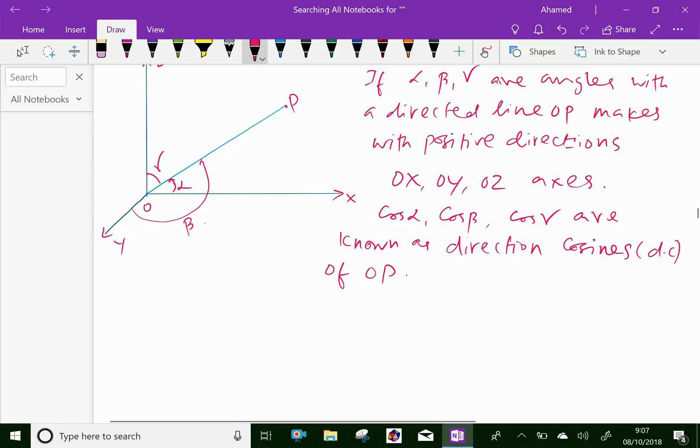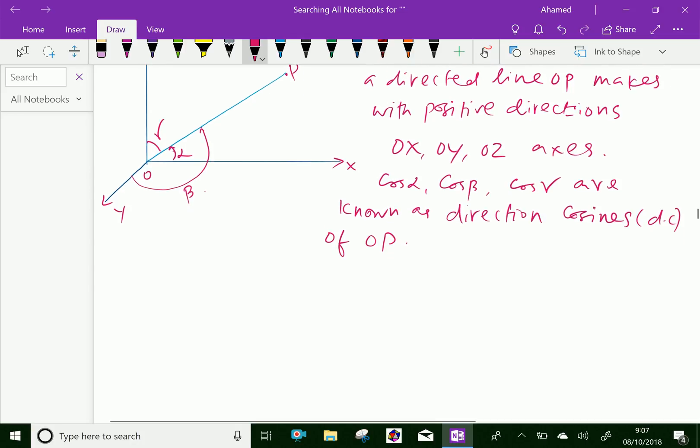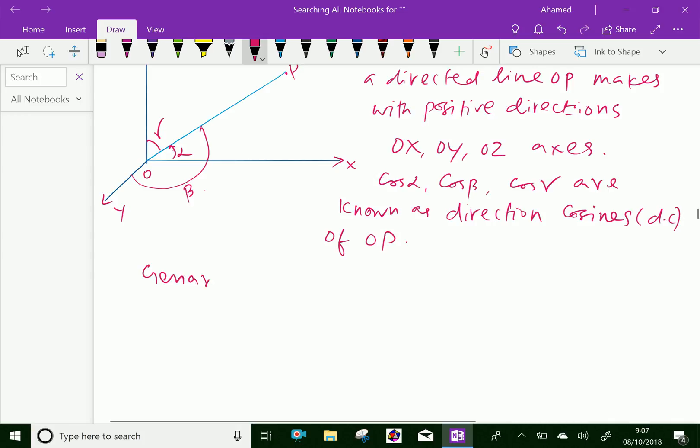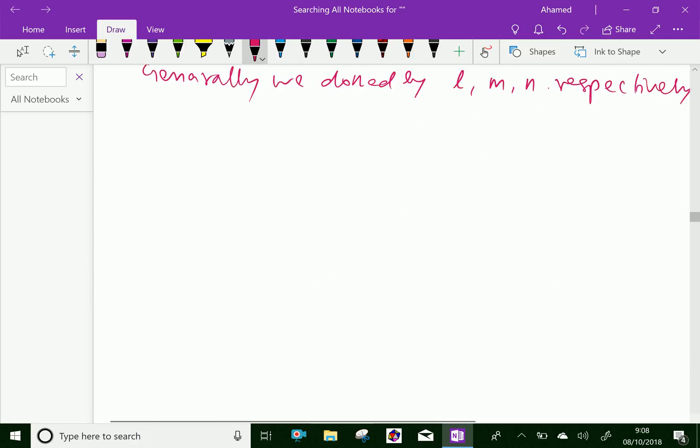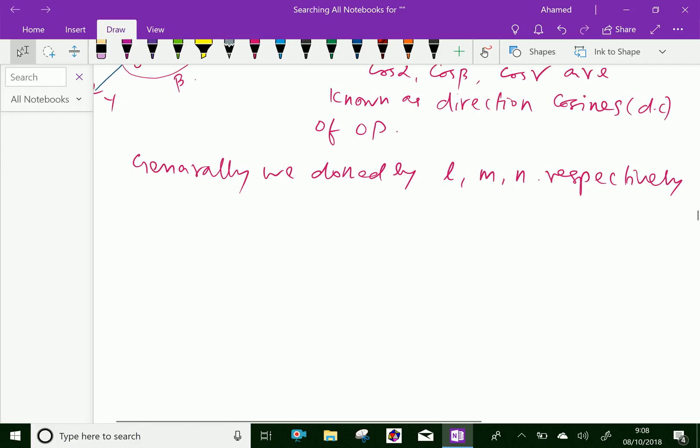Now generally we denote by L, M, and N respectively. Therefore, we can say L equals cos alpha, M equals cos beta, and N equals cos gamma.